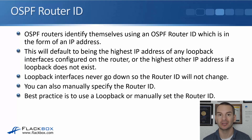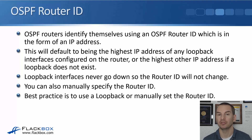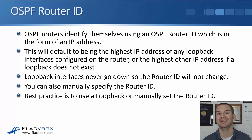OSPF routers identify themselves to other OSPF routers using an OSPF router ID, which is in the form of an IPv4 address. It defaults to using the highest IP address of any loopback interfaces configured on the router, or if there are no loopback interfaces it will use the highest other IP address. Loopback interfaces never go down, so the router ID will not change if you use a loopback. You can also manually specify the router ID. Best practice is to use a loopback or manually set the router ID so it won't change — this makes things more stable.